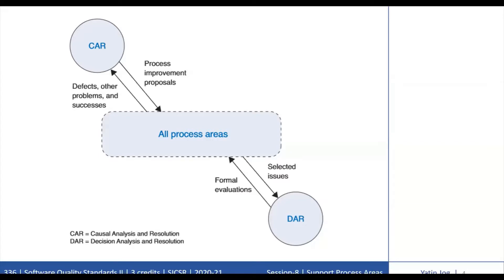Using the Causal Analysis and Resolution (CAR) process area, project members identify causes of selected outcomes and take action to prevent negative outcomes from occurring in the future, or to leverage positive outcomes. While the project's defined processes are the initial targets for root cause analysis and action plans, effective process changes can result in process improvement proposals submitted to the organization's set of standard processes.